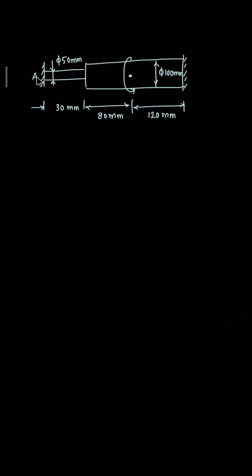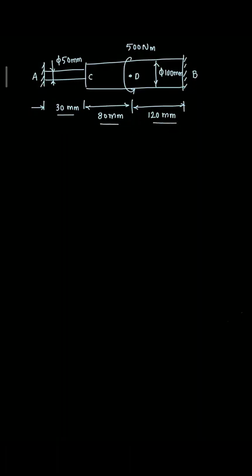In this problem, point A and point B are fixed. This is C and this is D. At point D, there is a torque acting of 500 Nm. The diameter of AC is 50 mm and diameter of CB is 100 mm. AC length is 30 mm, CD length is 80 mm, and DB is 120 mm. Find the resisting torque at A and resisting torque at B.